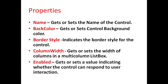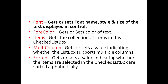Enabled property is used to get or set a value indicating whether the control can respond to user interaction. Font property is used to get or set the font name, style, and size of the text displayed in the control. ForeColor property is used to get or set the color of the text.